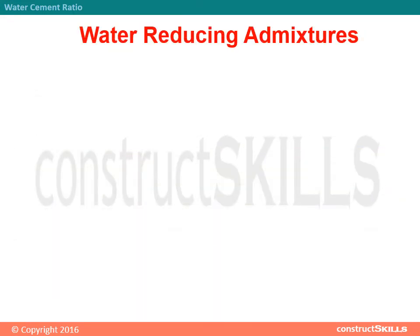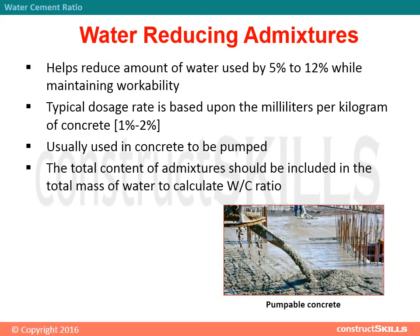Water reducing admixtures help reduce the amount of water used by 5% to 12% while maintaining workability. Typical dosage rate is based upon milliliters per kilogram of concrete. Usually used in concrete to be pumped. The total content of admixtures should be included in the total mass of water to calculate the water cement ratio.